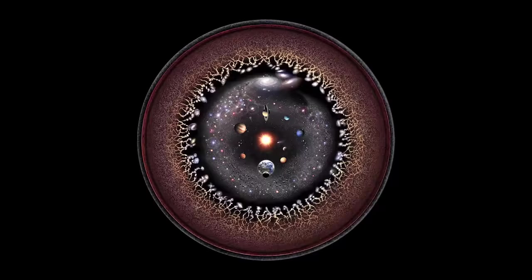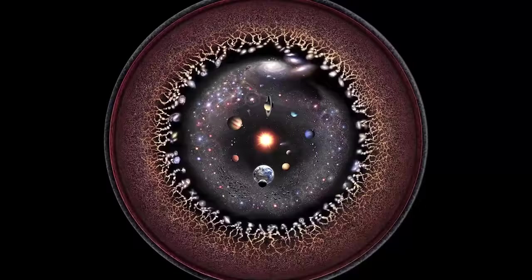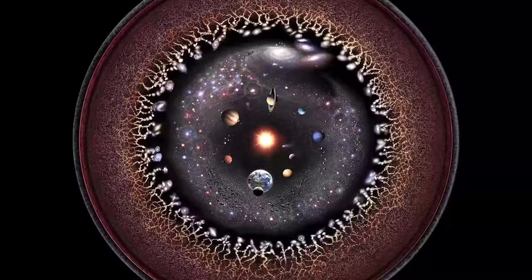our contemporary measuring instruments are not able to say whether the cosmos is unlimited or not. However, at present, the observable part of the universe seems to represent a sphere of 93 billion light-years in diameter. It is estimated that the cosmological horizon is about 45 billion light-years from Earth.